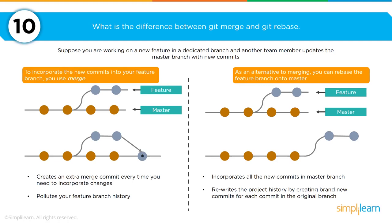Git merge allows you to take code from your branch and merge it back into the master. Git rebase is a slightly different approach — it's for projects where you reach a point where you want to effectively restart the project and ignore the complete history before that point. Git rebase rewrites the project history by creating a brand new mainline branch that ignores all previous branches.